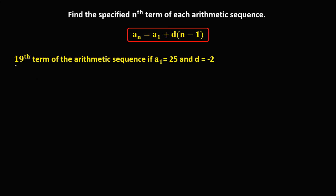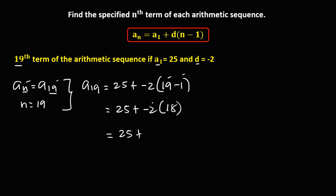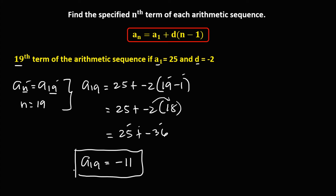Then for this given, since we're looking for the 19th term, a sub n is equal to a sub 19, so n is 19. To solve for the 19th term: a sub 19 equals a sub 1, that's 25, plus the common difference, that's negative 2, times n is 19, then minus 1. So we have 25 plus negative 2 times 18, which is negative 36. So 25 plus negative 36 is negative 11. So this is now the 19th term.